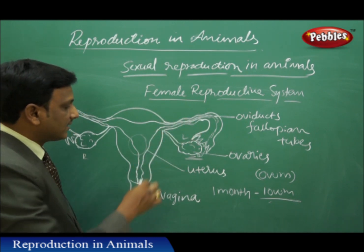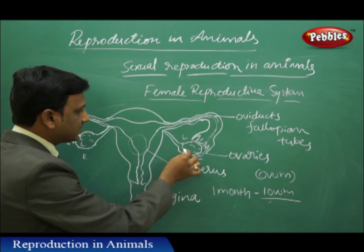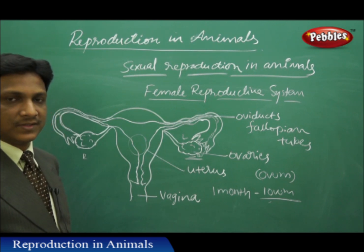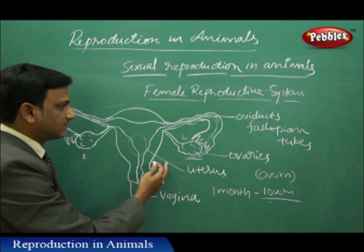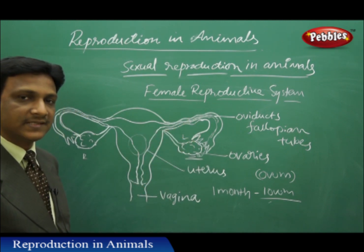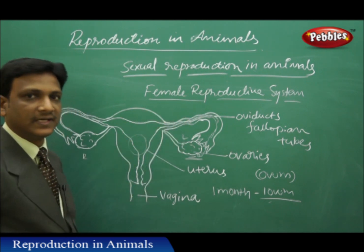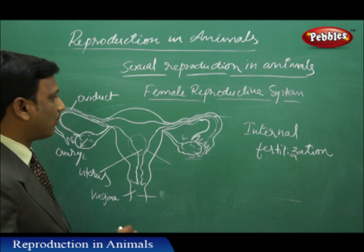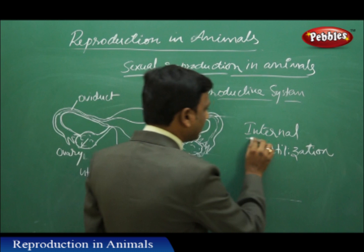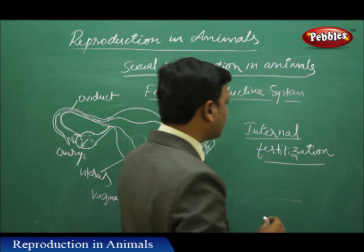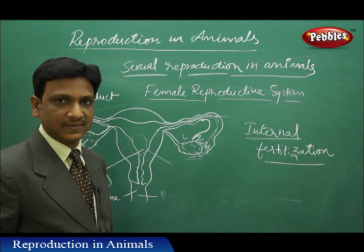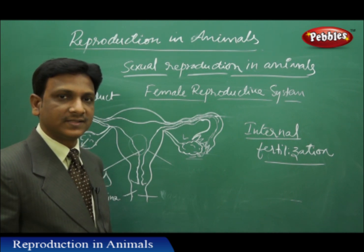The female cells are produced in the female body and are fertilized in the female reproductive system. The male cells must reach the female system for fertilization. When fertilization takes place inside the body, we call it internal fertilization. This kind of internal fertilization is seen in insects, lizards, snakes, and mammals - fertilization takes place in the body of the female.